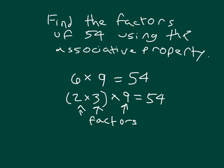Now I also can associate these by associating the 3 and 9 instead of associating the 2 and the 3. And I know that 3 times 9 is 27. So that 2 times 27 does give us 54. That means 27 also is a factor of 54.